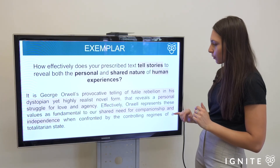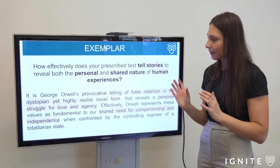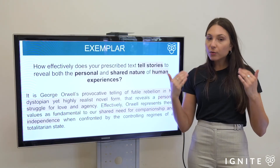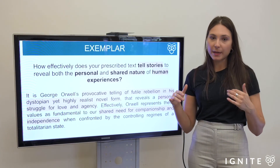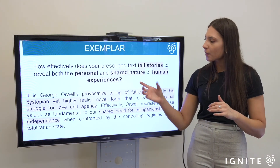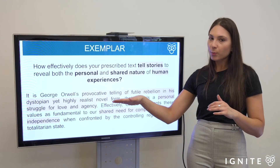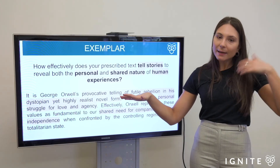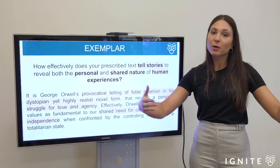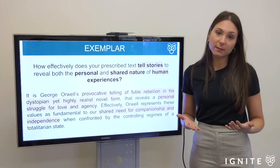'Effectively Orwell represents these values as fundamental to our shared need for companionship and independence' covers the shared nature of human experience. Through that personal struggle he is elucidating this broader shared issue. What I hope you take away is how you can use the question to work for you in the exam: go through those steps, have your exemplar pre-prepared, time it so you have time to unpack the question, and when embedding key terms make sure you're adding genuine value that foregrounds the direction of the essay so everything you go on to raise supports your thesis.